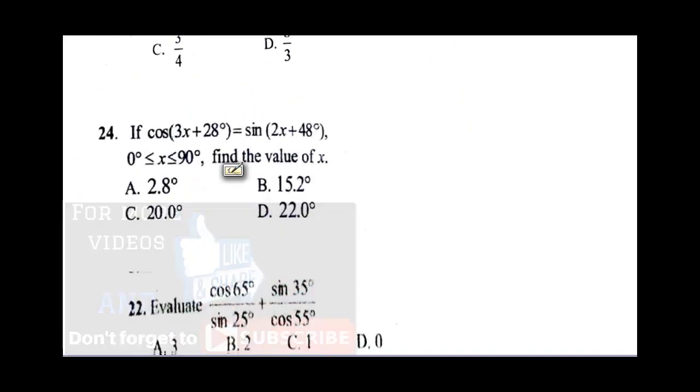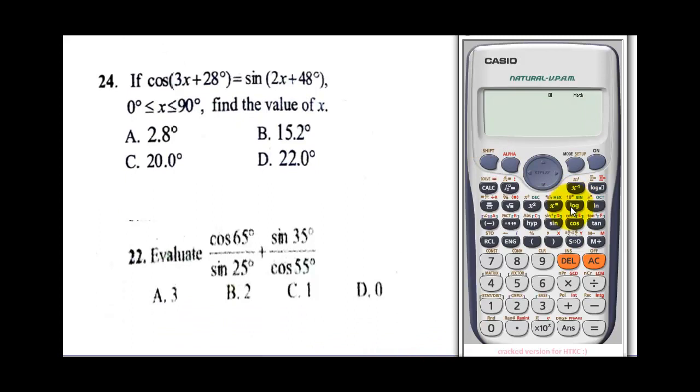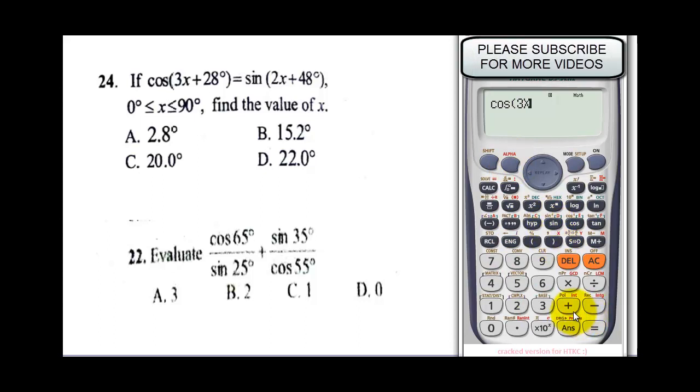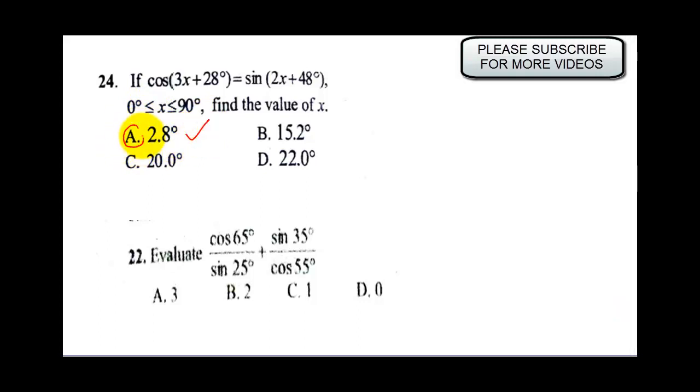The second question says: if cos(3x + 28°) equals sin(2x + 48°), find the value of x. To solve this equation, I'll enter cos(3x + 28), close the brackets, then sin(2x + 48), close my bracket, press shift, and solve. As easy as that, it's dropped the final answer for me: 2.8 degrees is the answer.